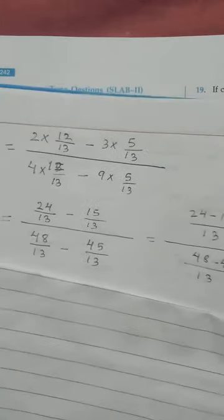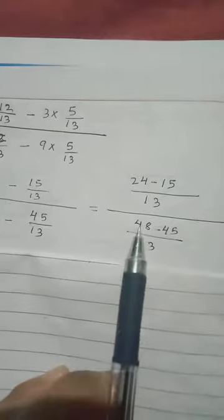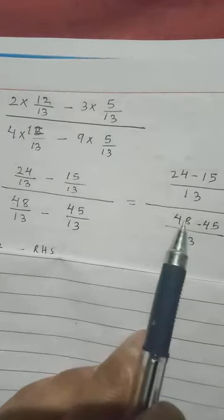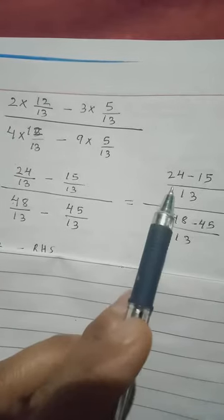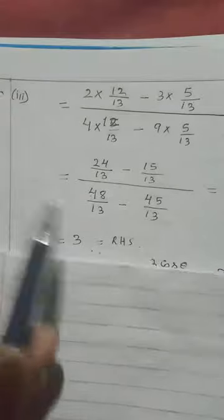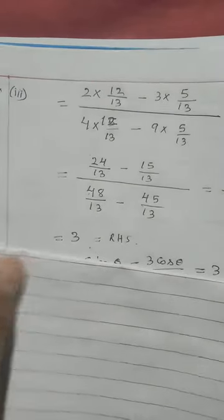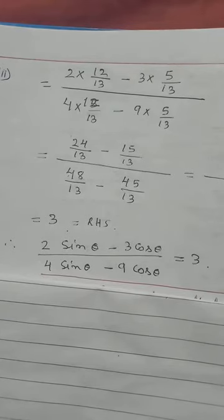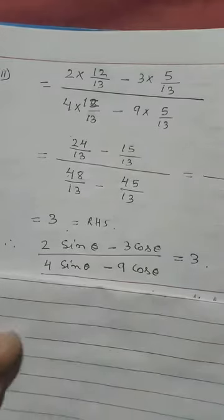Both denominators are 13, so LCM is 13. The numerator becomes 24 - 15 = 9, and the denominator becomes 48 - 45 = 3. The 13s cancel, leaving 9/3 = 3, which equals the right hand side. Since left hand side equals right hand side, it is proved.